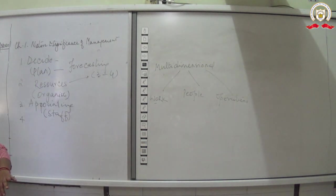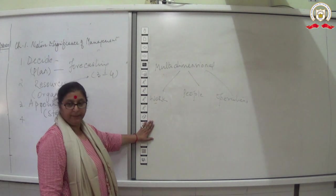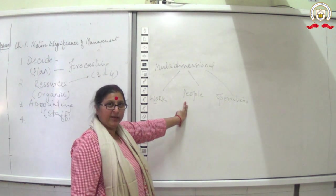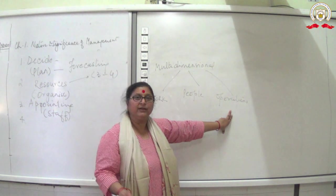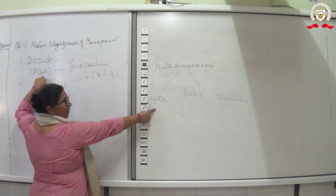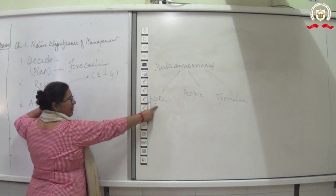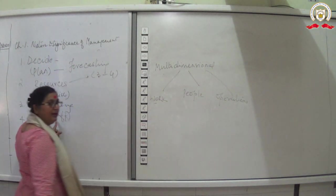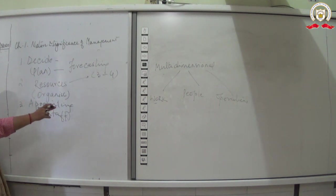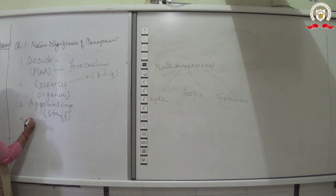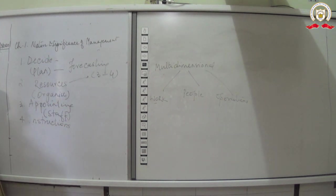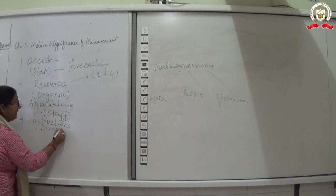Recall from the last class that management is multi-dimensional — consisting of work, people, and operations. Work means putting the plan into action, people means appointing and taking care of them, and operations means starting the production process. So planning and organizing relate to work, staffing relates to people, and directing and controlling relate to operations.